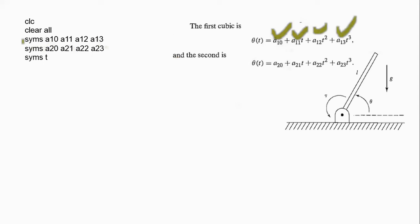There are two methods to define any parameters in MATLAB. The first method is the algebraic method and the second method is the numerical method. You can assign a numerical value to parameter a10 and all other parameters of the cubic, or you can save these parameters by their names using the command syms. So there are these parameters in the cubic and one variable is time t.